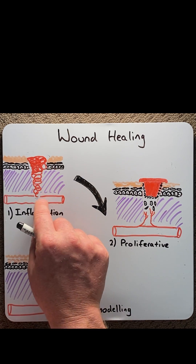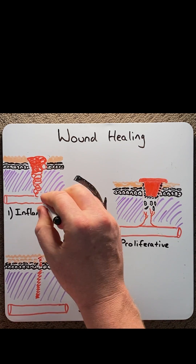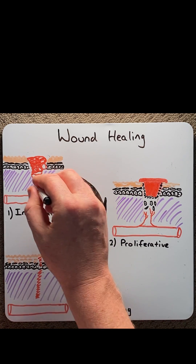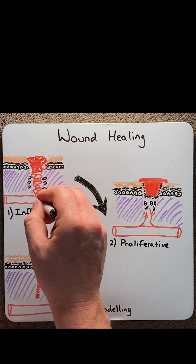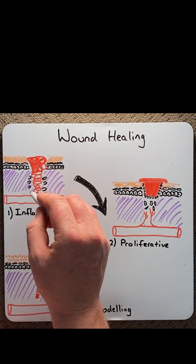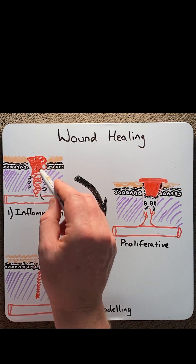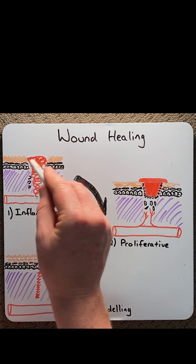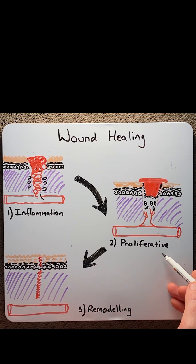White blood cells would come into the area, such as neutrophils and macrophages. These cells would phagocytose any dead cells as well as any microorganisms, and therefore allow the next phase to start, which is the proliferative phase.